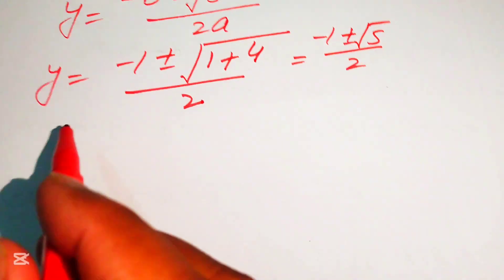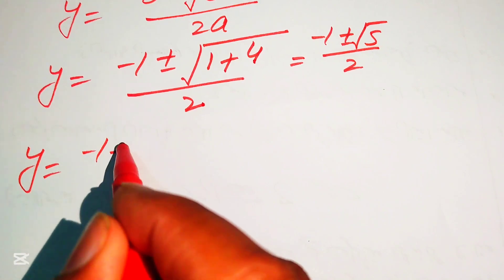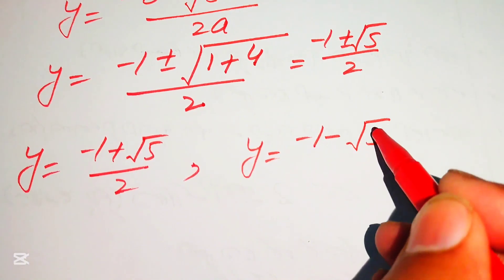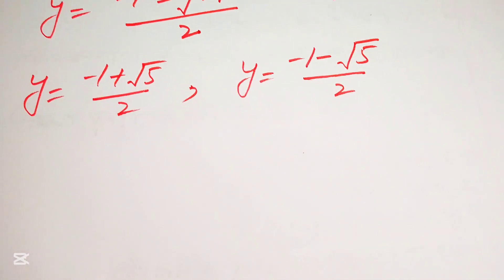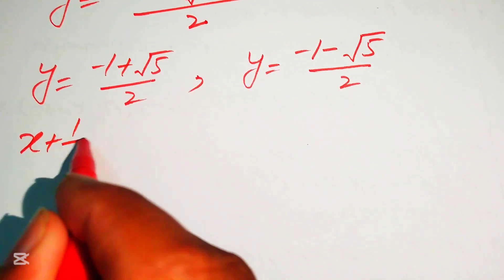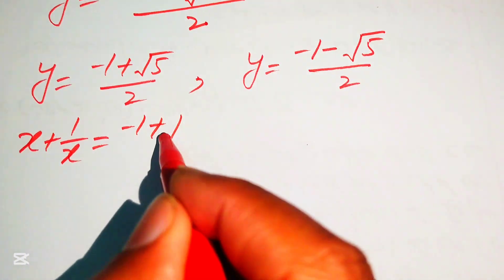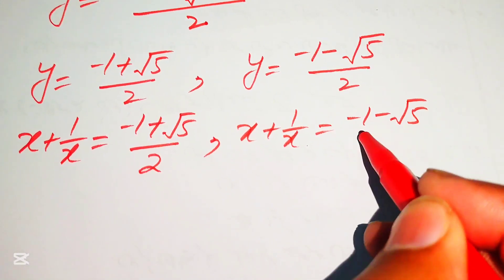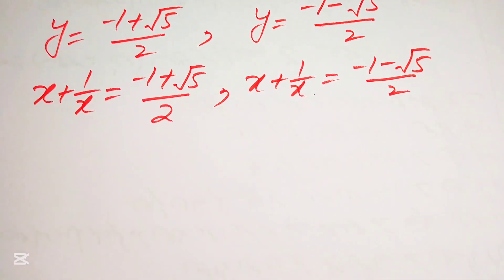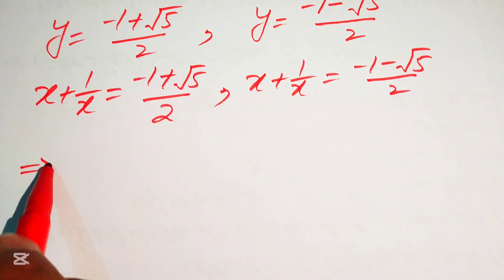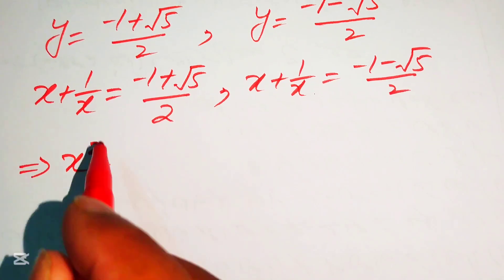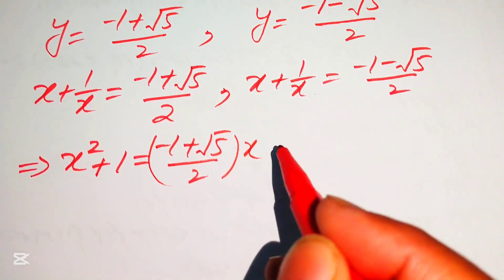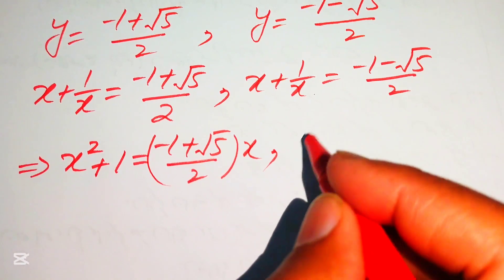The two values of y are: y equals minus 1 plus square root of 5 divided by 2, and y equals minus 1 minus square root of 5 divided by 2. Back-substituting y equals x plus 1 over x, in the first case x plus 1 over x equals minus 1 plus square root of 5 divided by 2, and multiplying through by x gives x squared plus 1 equals minus 1 plus square root of 5 divided by 2, times x.